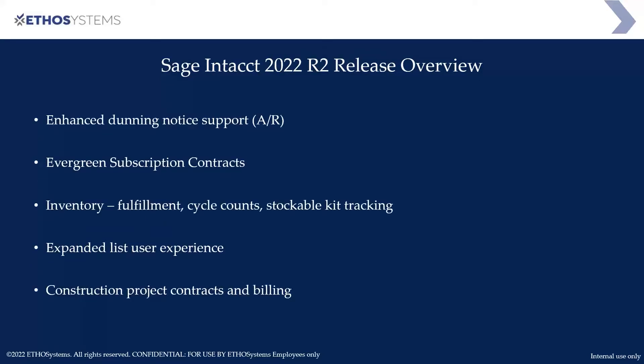Some of the enhancements in this release include dunning notices for accounts receivable, evergreen subscription contracts in the contracts module, and enhancements to inventory including fulfillment, cycle counts, and stockable kit tracking.